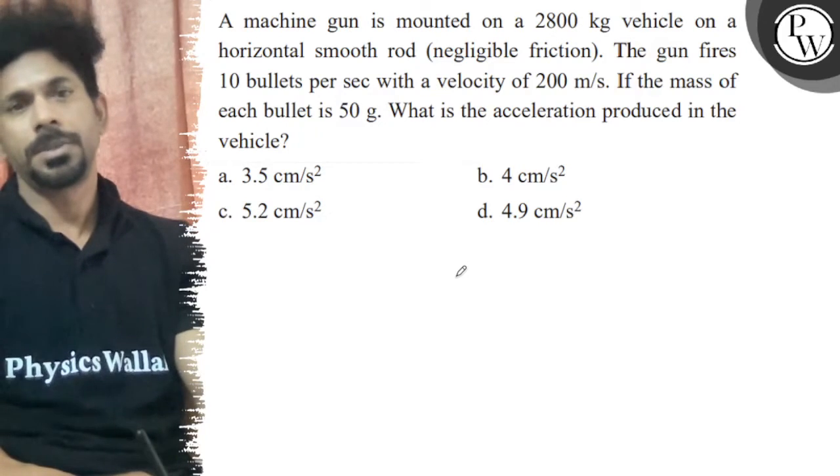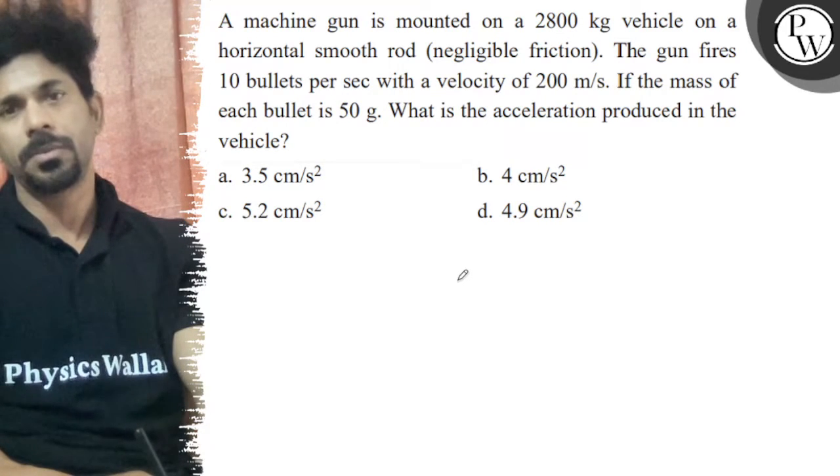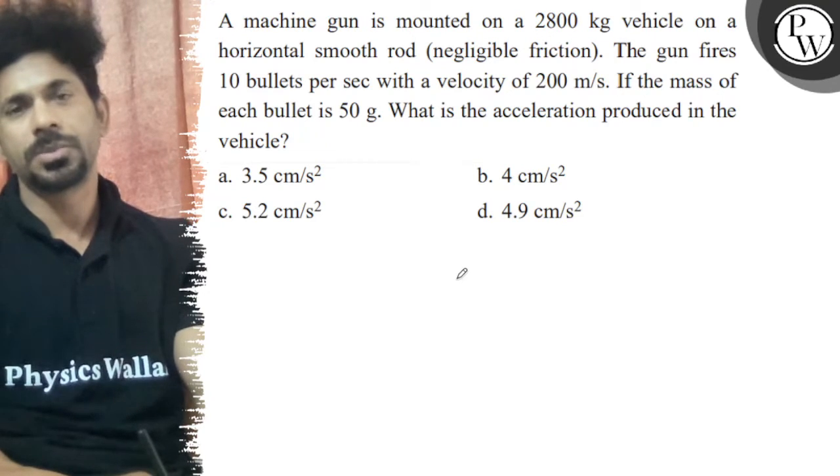Hello let's see the question. A machine gun is mounted on a 2800 kg vehicle on a horizontal smooth road.